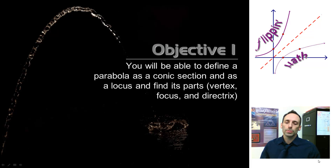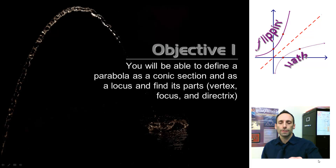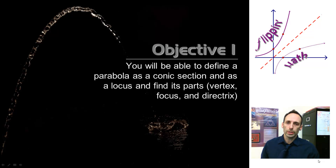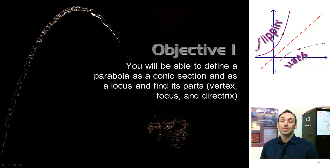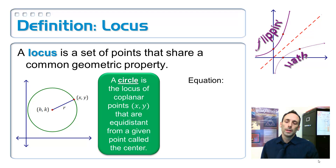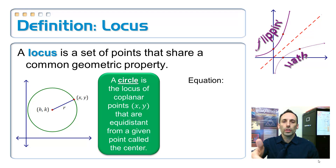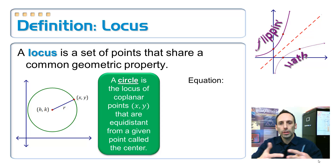The second part of the objective is being able to define a parabola as a locus. What the heck's a locus? Well, in geometry, you've pretty much already talked about a locus — you just didn't call it that. A locus is just a set of points that all have some sort of property in common.